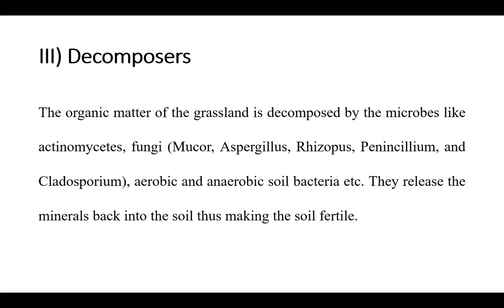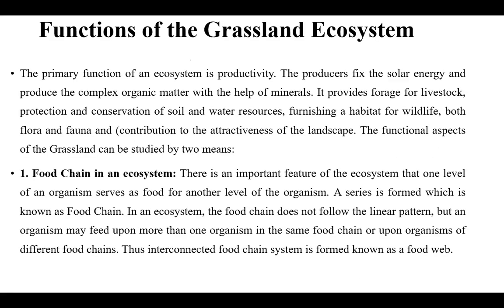The decomposers are the third type of component in the food chain of the grassland ecosystem. They include Actinomycetes, fungi, and microbes that decompose dead beings. These include Mucor, Aspergillus, Rhizopus, Penicillium, and Cladosporium, as well as aerobic and anaerobic soil bacteria, which release minerals back into the soil, making the soil fertile.